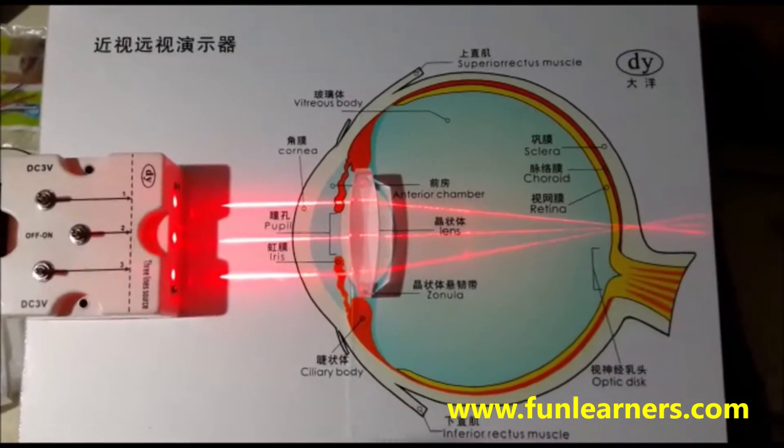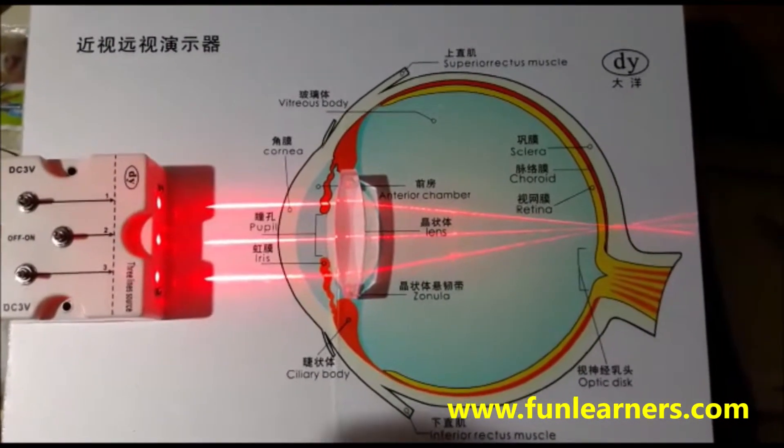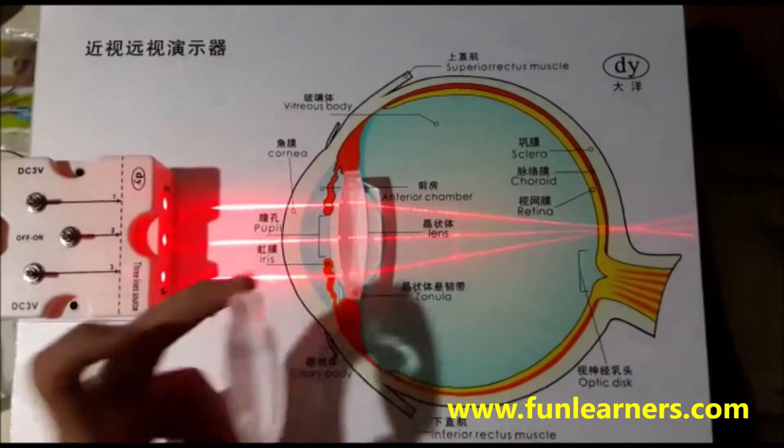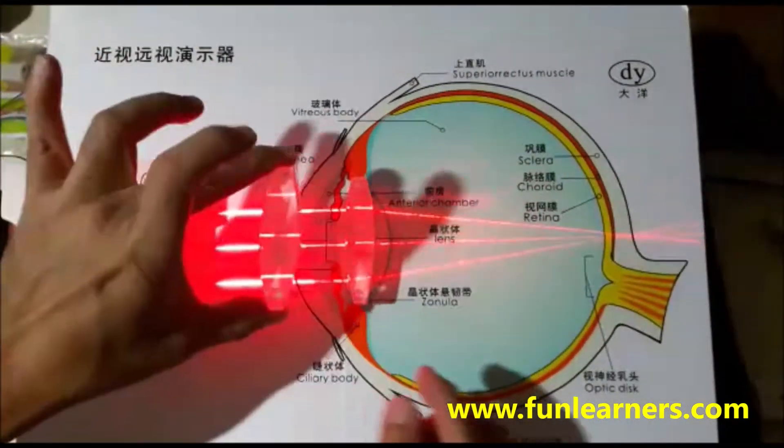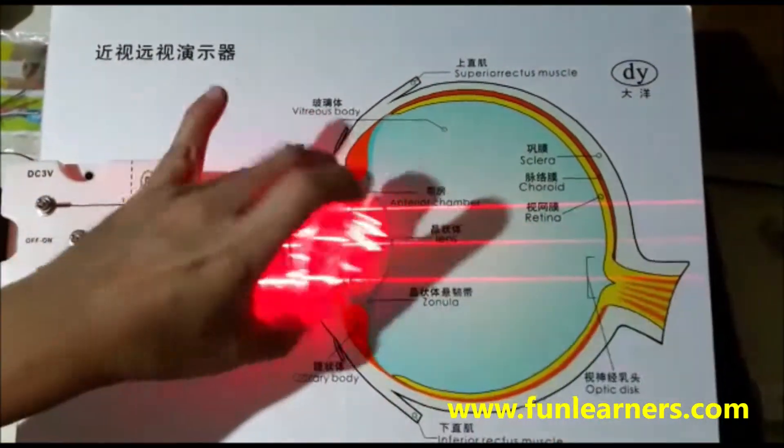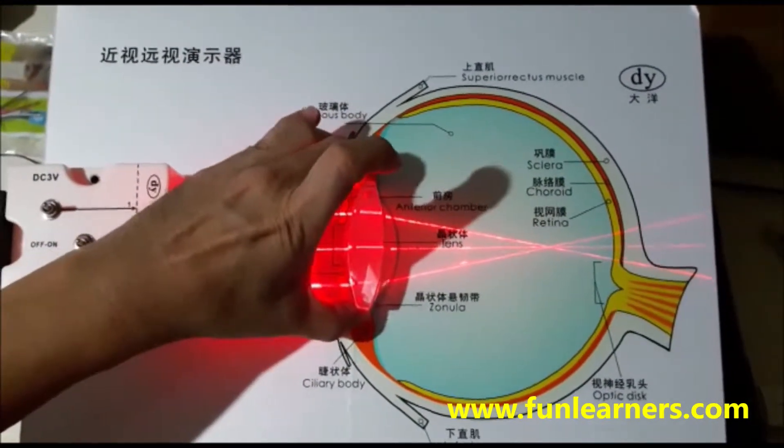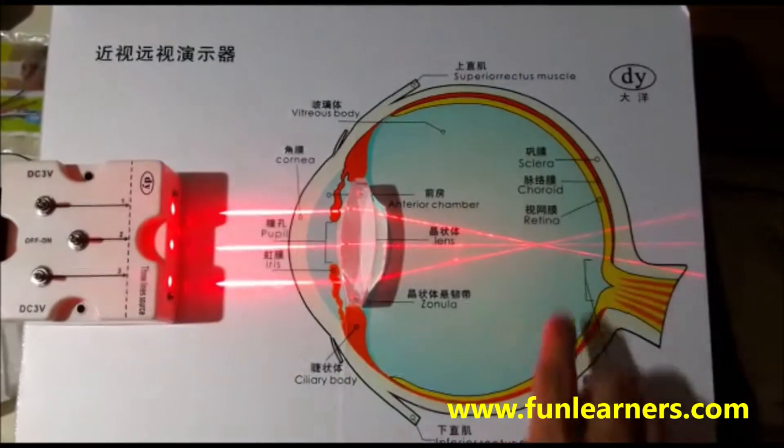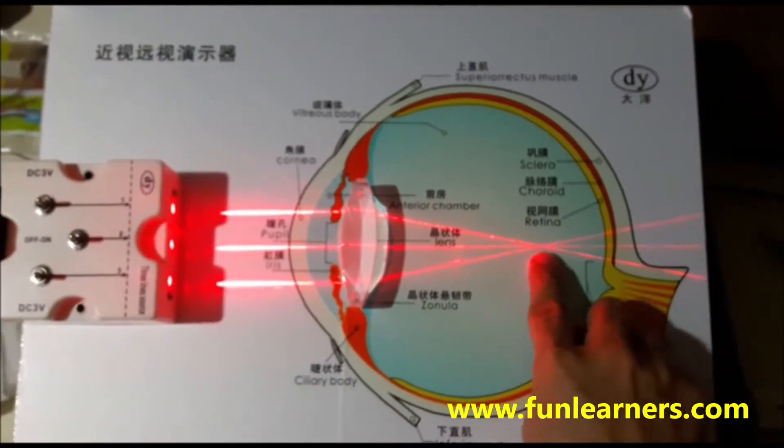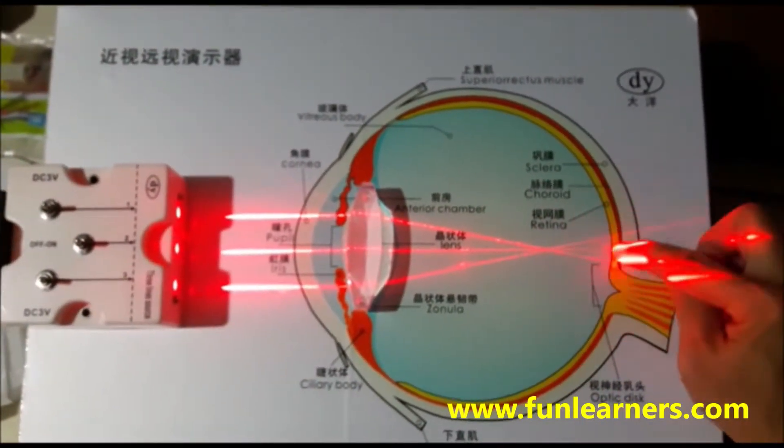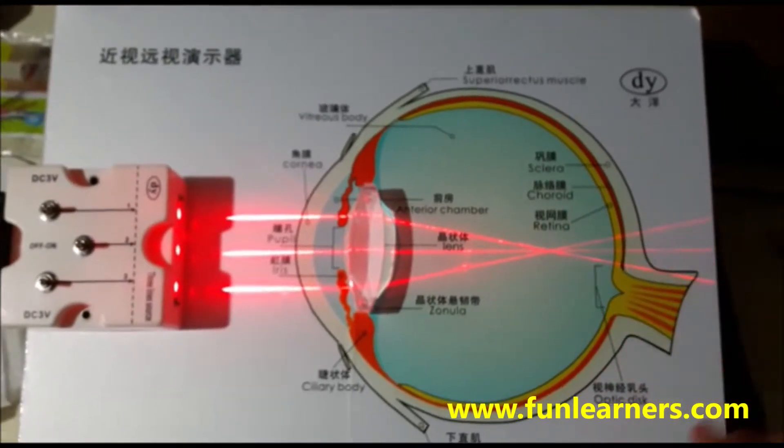If you are short-sighted, the lens shape is slightly different. So this is short-sightedness. The light converges at this point and not at the retina. What you see here will be a blur image.